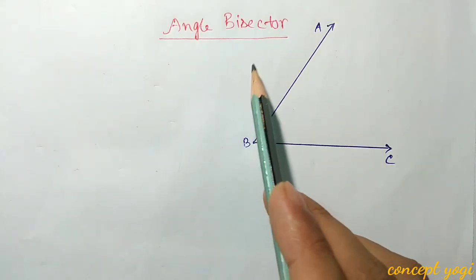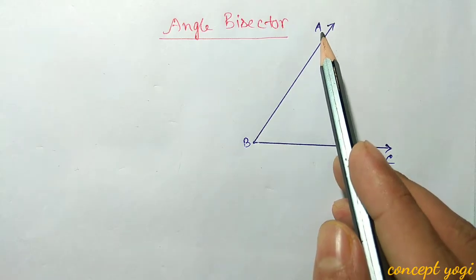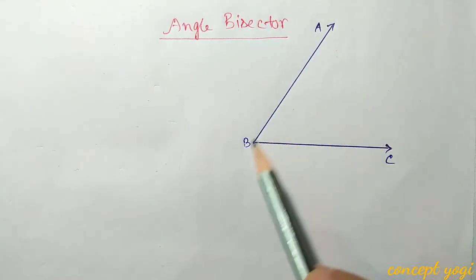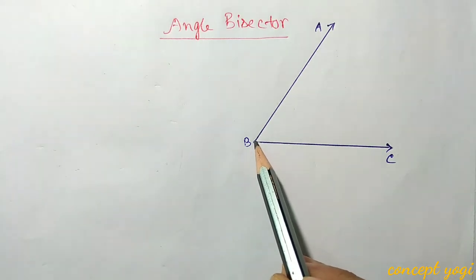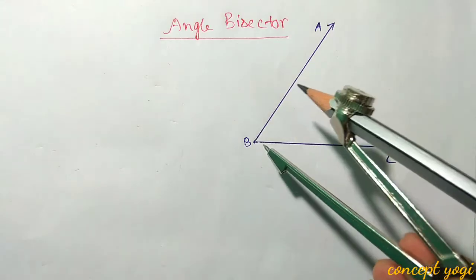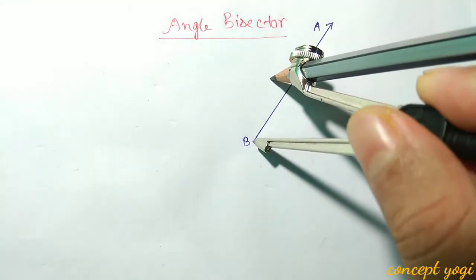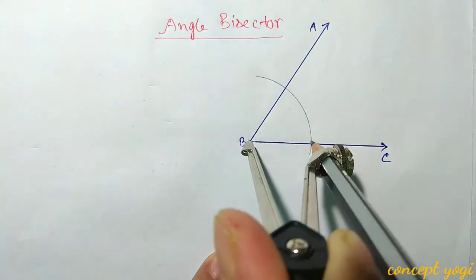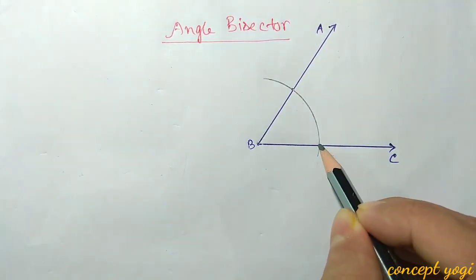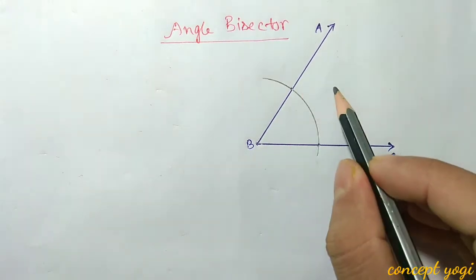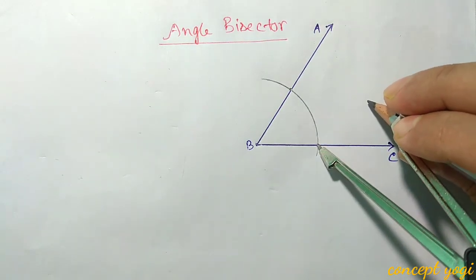Now we will learn how to construct an angle bisector. Angle bisector means we will divide a given angle into two equal parts. Suppose angle ABC is given and we need to bisect it. First, take the vertex B as center and draw one arc with any radius. Now you see this arc and the two arms of the angle intersect at two points. We will keep our compass at these two points and draw two arcs such that they must intersect. Place the compass at one point and draw one arc.